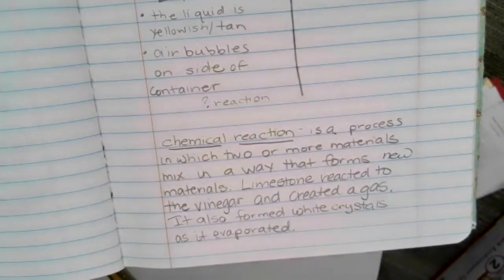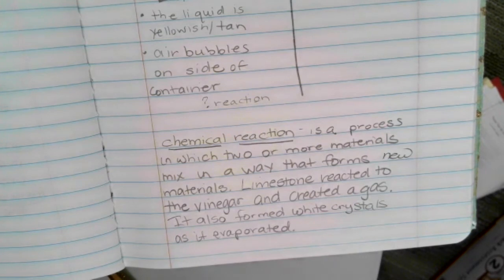Limestone contains a mineral called calcite. And any time calcite reacts, any rock or any rock that has the mineral calcite is going to react to acid rain. So because limestone has calcite inside of it, it will always react to acid rain.